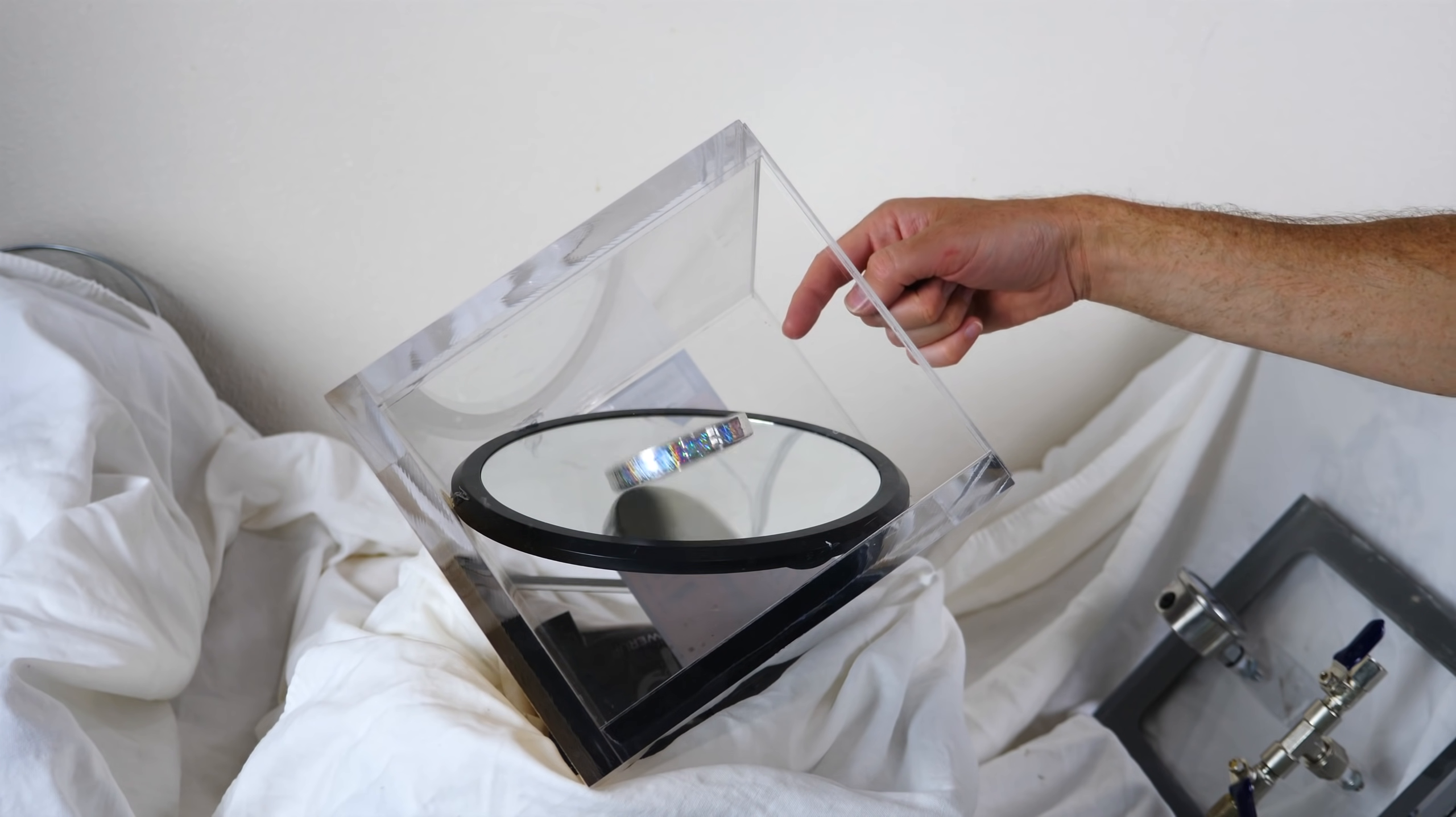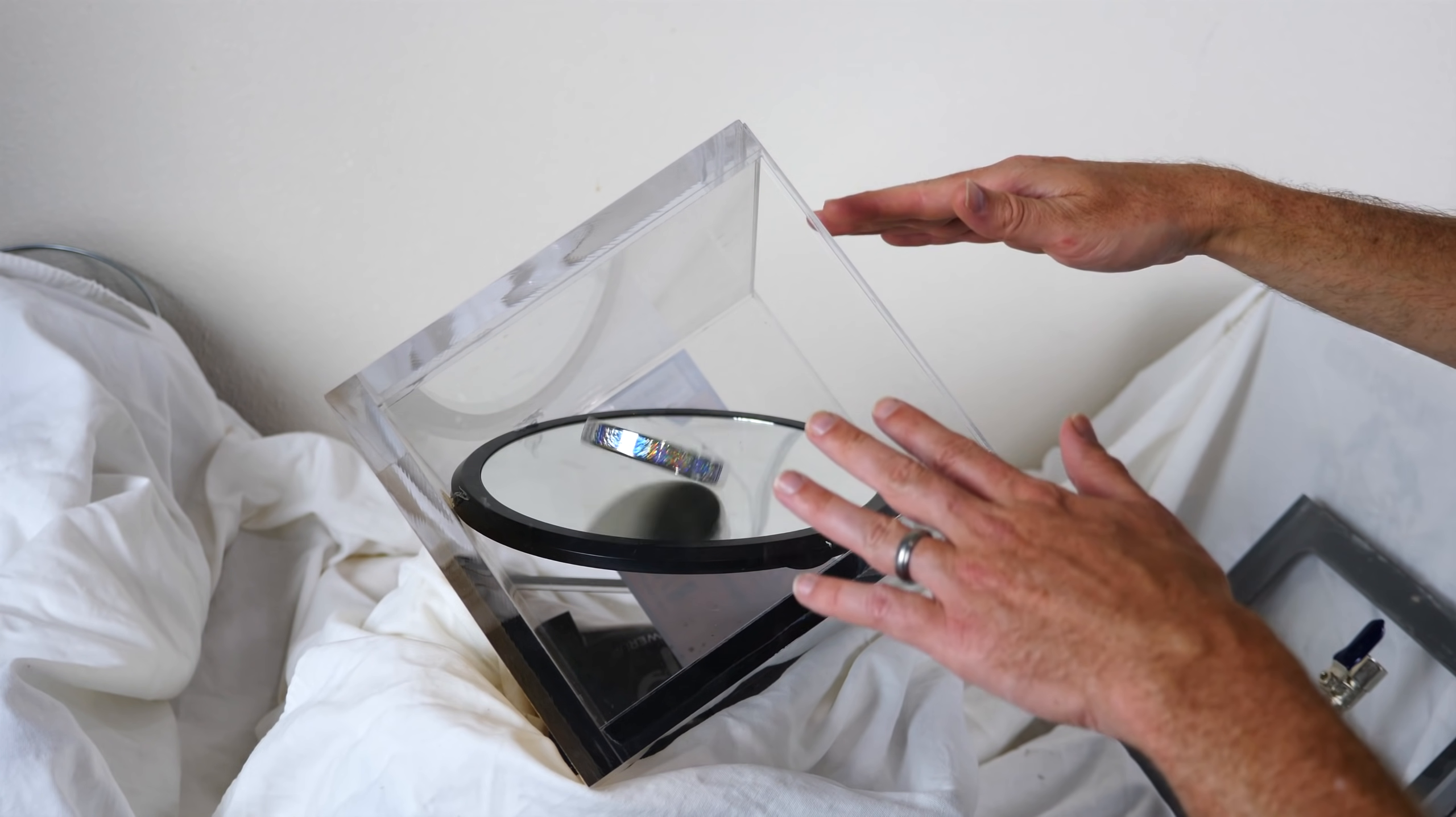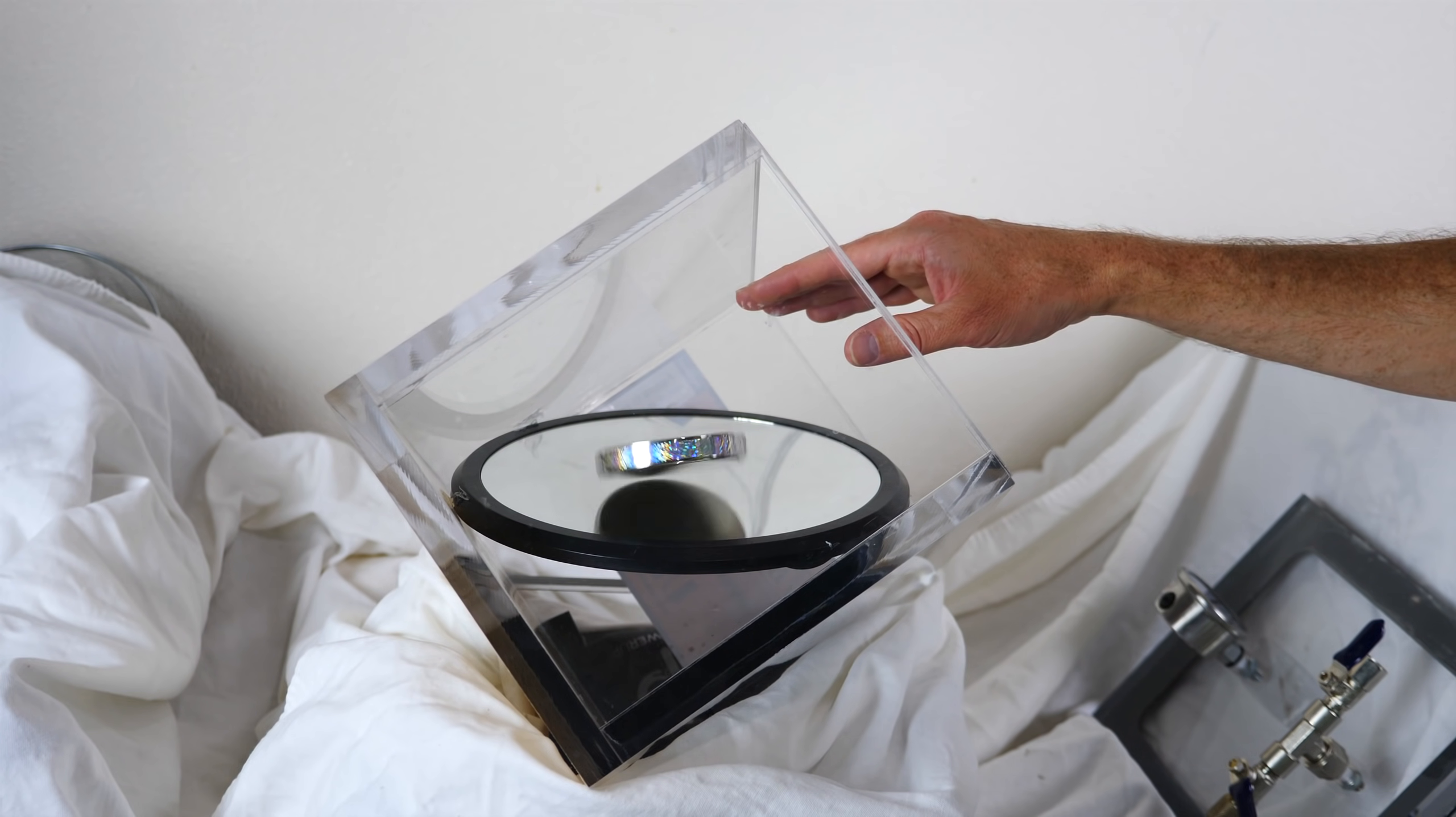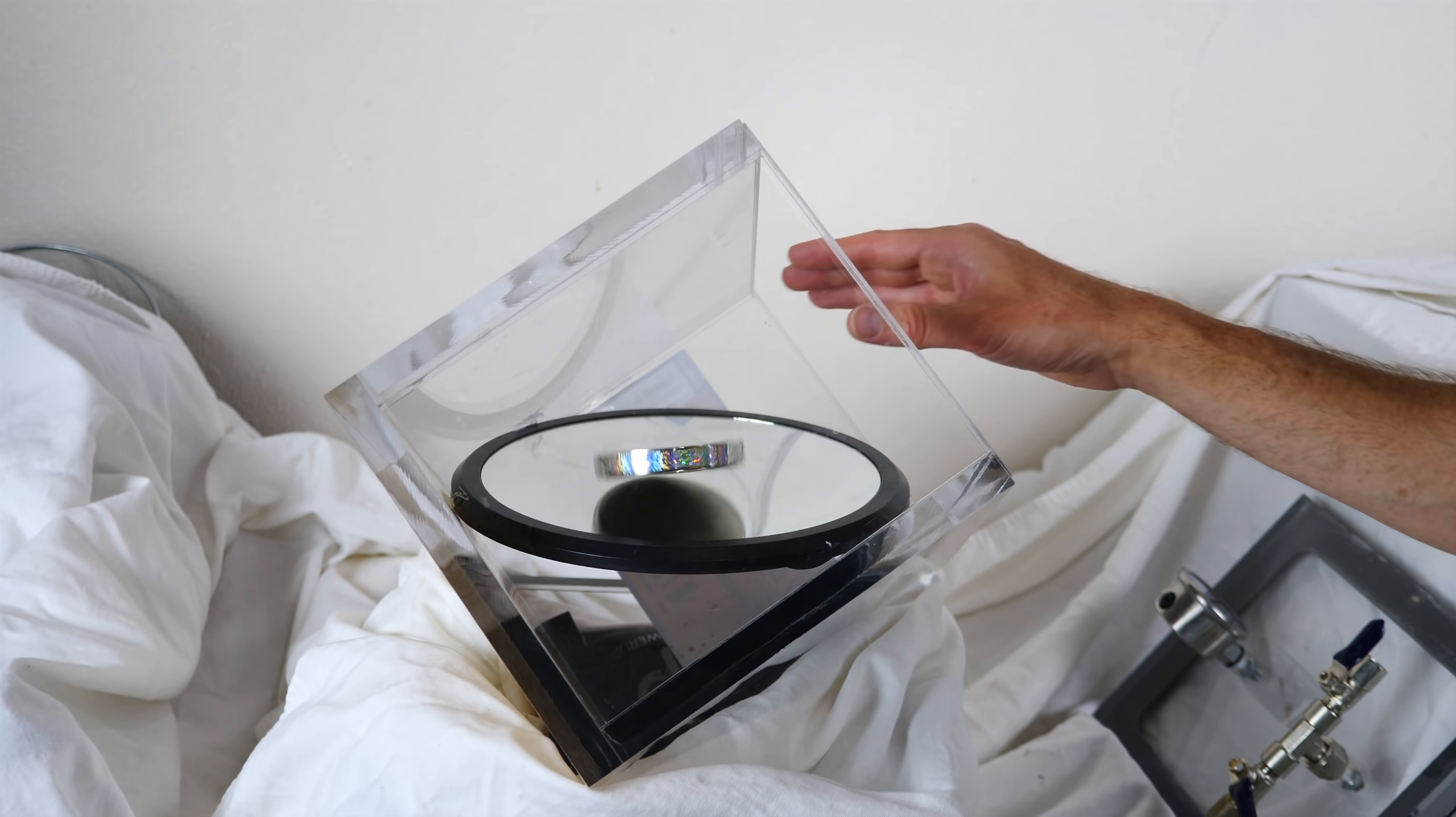But what actually ends up happening is as it rolls, it reduces the speed, and so it gets lower and lower and vibrates faster and faster. As it vibrates faster, it creates more and more air friction until eventually the air friction becomes the dominating factor.